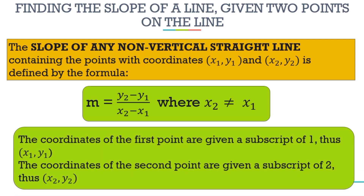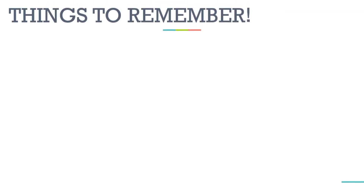The coordinates of the first point are given a subscript of 1, so we have x₁ and y₁. The coordinates of the second point are given a subscript of 2, so we have x₂ and y₂. Is it clear? Before we proceed to finding the slope given two points, we need to remember some things.